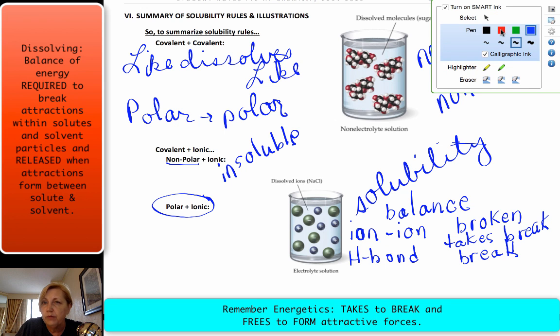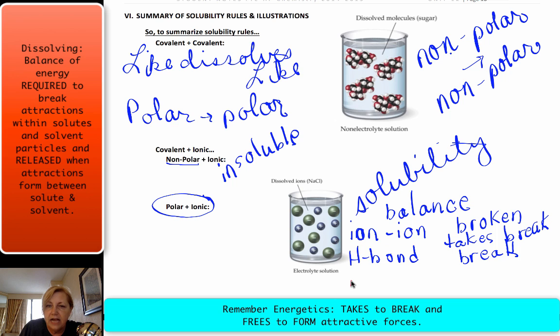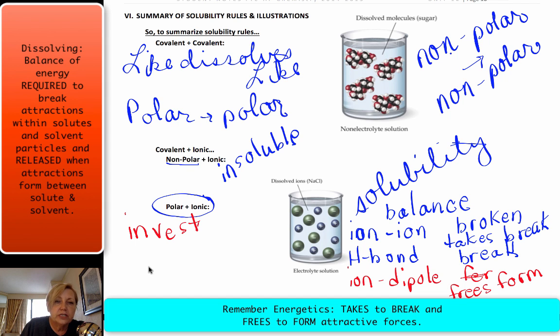And then we have to form an ion-dipole, the ion attracted to water we form that and we free energy when we form, freeze to form attractions. So energy is released when we form and we have to look at the energy that we have to invest in the process versus the return on our investment. And that's what's going to dictate whether or not something is going to form a solution and that's where we get our solubility rules.